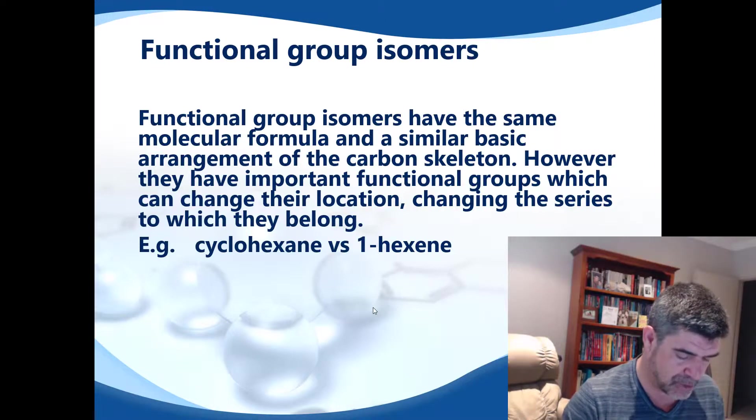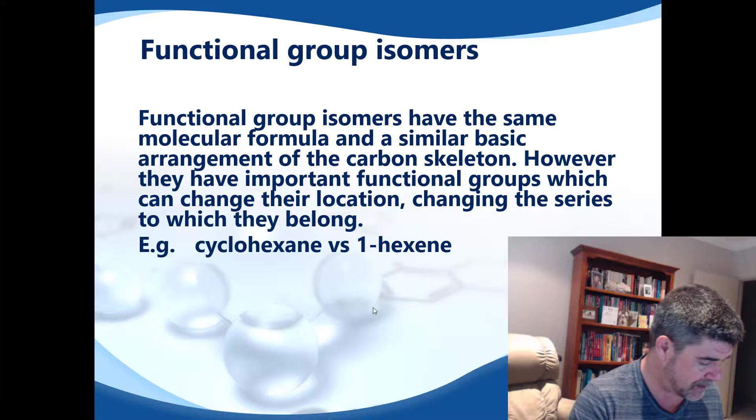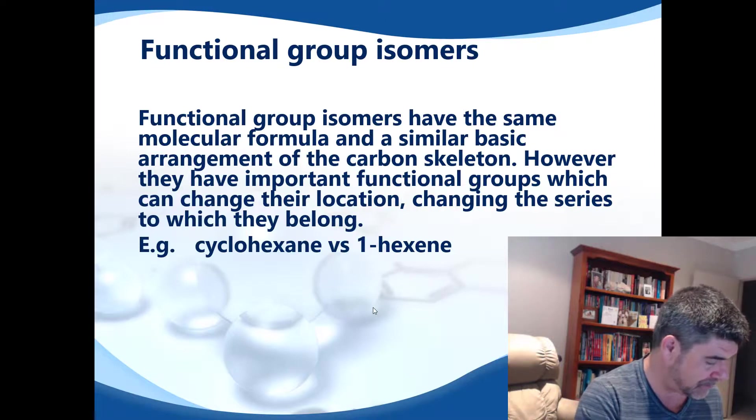This is a new kind of compound that we haven't looked at before, so let's see how this one comes together. Hexane has 6 carbons: 1, 2, 3, 4, 5, 6.